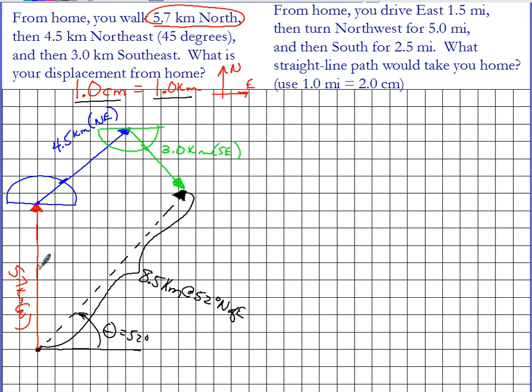Now, I could just as well have described that angle. I'm going to call that beta. That angle would be the complement of 52, so that would be 38 degrees. And so I could have just as easily said that that vector was 8.5 kilometers at 38 degrees east of north.